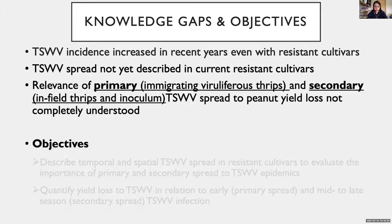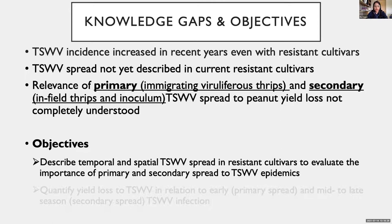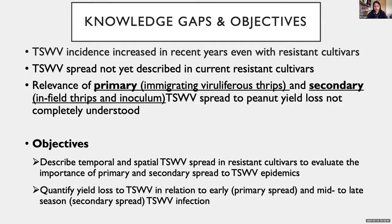The objectives of this study were to characterize the temporal and spatial spread of TSWV in two runner-type resistant cultivars, in order to make inferences on the relative importance of primary and secondary spread. We also aimed to quantify peanut yield loss to TSWV in plants infected in early or mid-to-late season with varying disease severity.